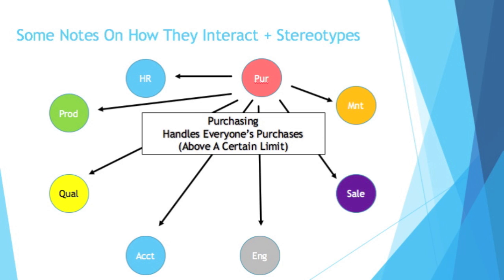Last, I want to talk about purchasing. Purchasing handles everyone's purchases above a certain dollar limit. At a lot of facilities, there'll be something in place where you can go to your own department head and say you need to buy something up to $2,000 or $5,000 and you're good to go. Or maybe you yourself can spend a couple hundred and no one even cares — you might have credit at a local store, sign someone's name, and you're good to go.